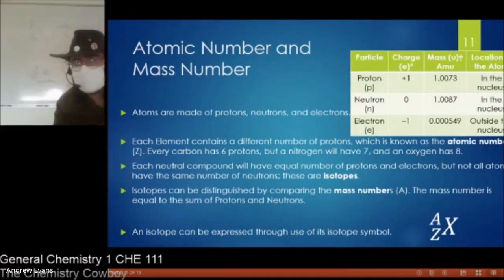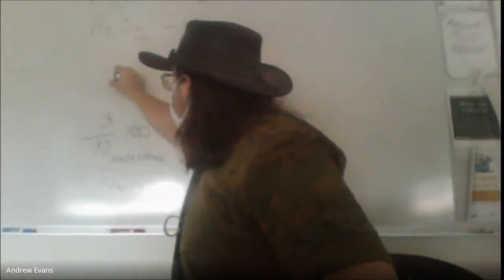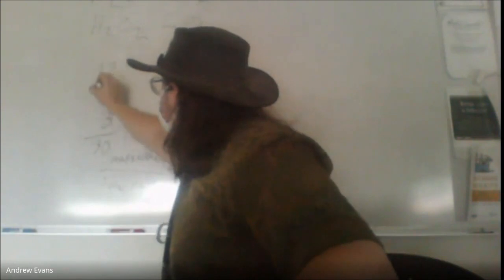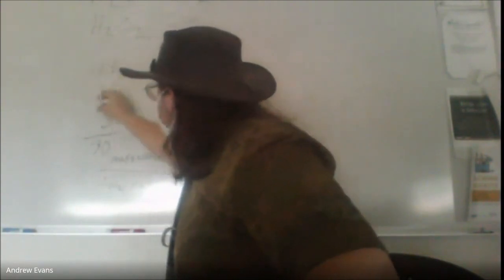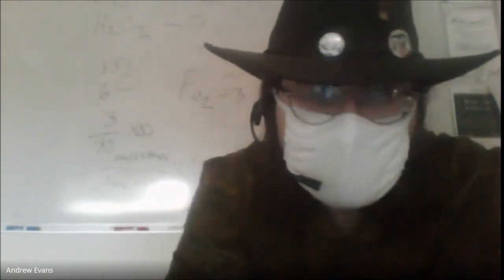So we can represent any given isotope by the symbol AZX. So if x is just the chemical element, so for the example of carbon 13, carbon 13 would be C 13 over 6. The 13 tells me it has 6 and 7 neutrons and the carbon is already given.